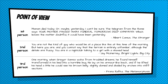One type of point of view you don't come across too often is called the second person. Here, you the reader are presented as a character in the story. One fairly famous example is from the 80s novel Bright Lights, Big City by Jay McInerney: 'You are not the kind of guy who would be at a place like this at this time of the morning. But here you are, and you cannot say that the terrain is entirely unfamiliar, although the details are fuzzy. You are in a nightclub, talking to a girl with a shaved head.' This kind of narration is difficult because readers are often resistant to it, so you don't see it very often.